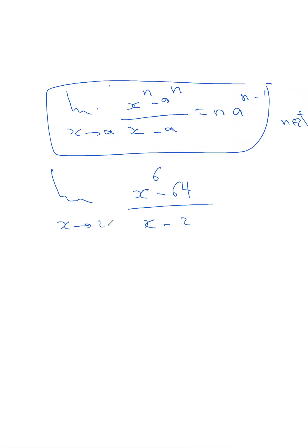We have all the conditions of the theorem — x and a appear in both numerator and denominator with a difference structure. We can identify the power of the number 64 as 2^6. The powers in the denominator are the same and the bases are the same. So we rewrite: limit of x^6 minus 2^6 over x minus 2, as x tends to 2.